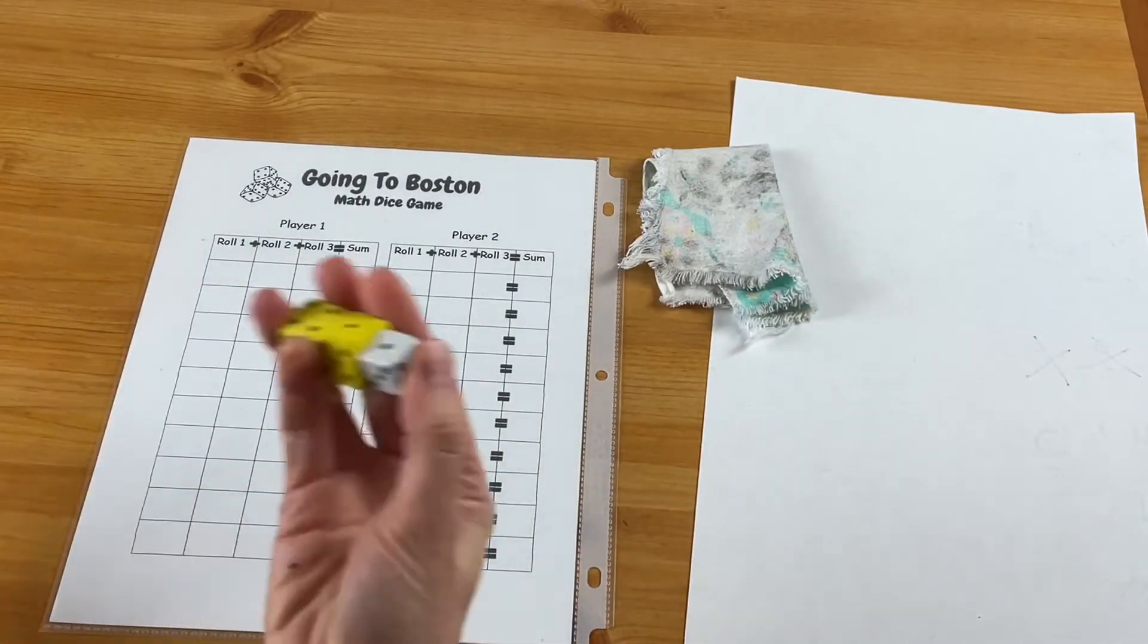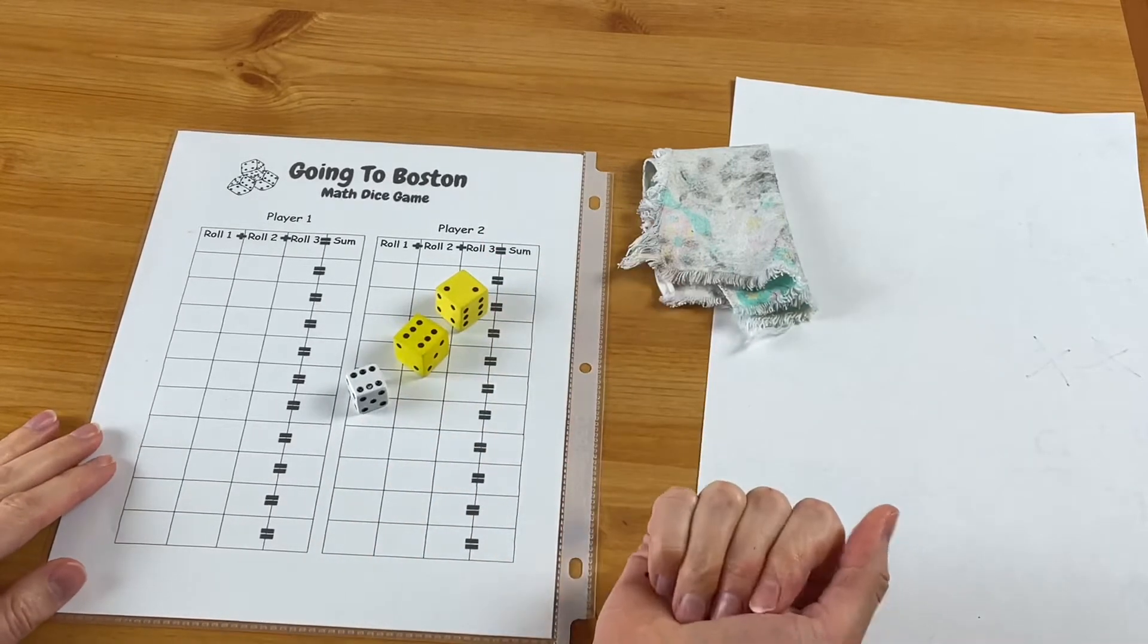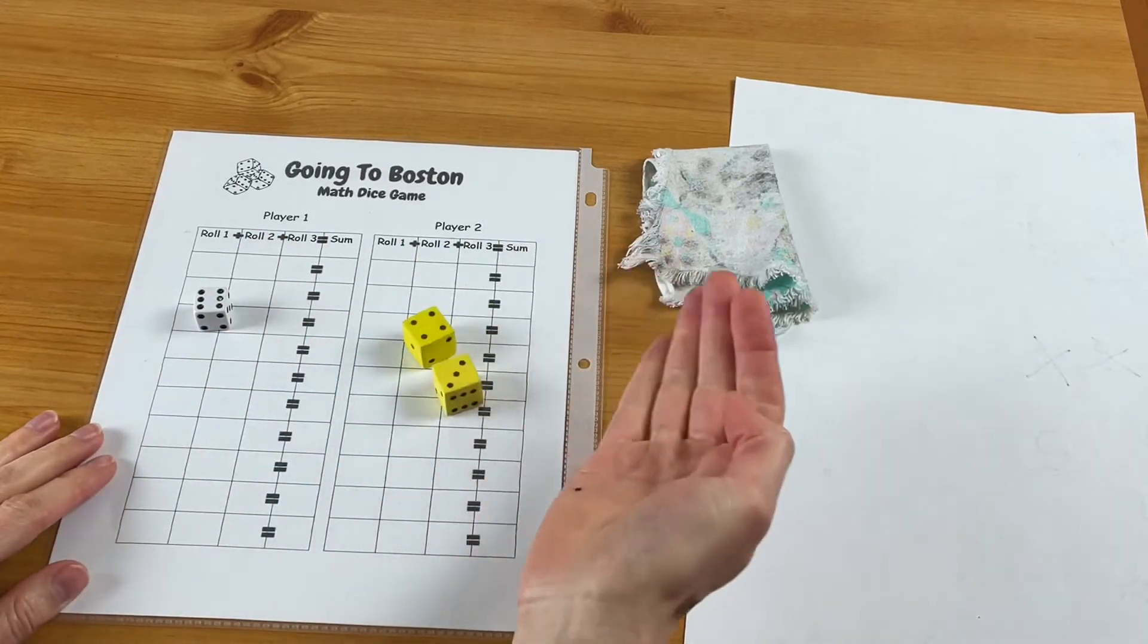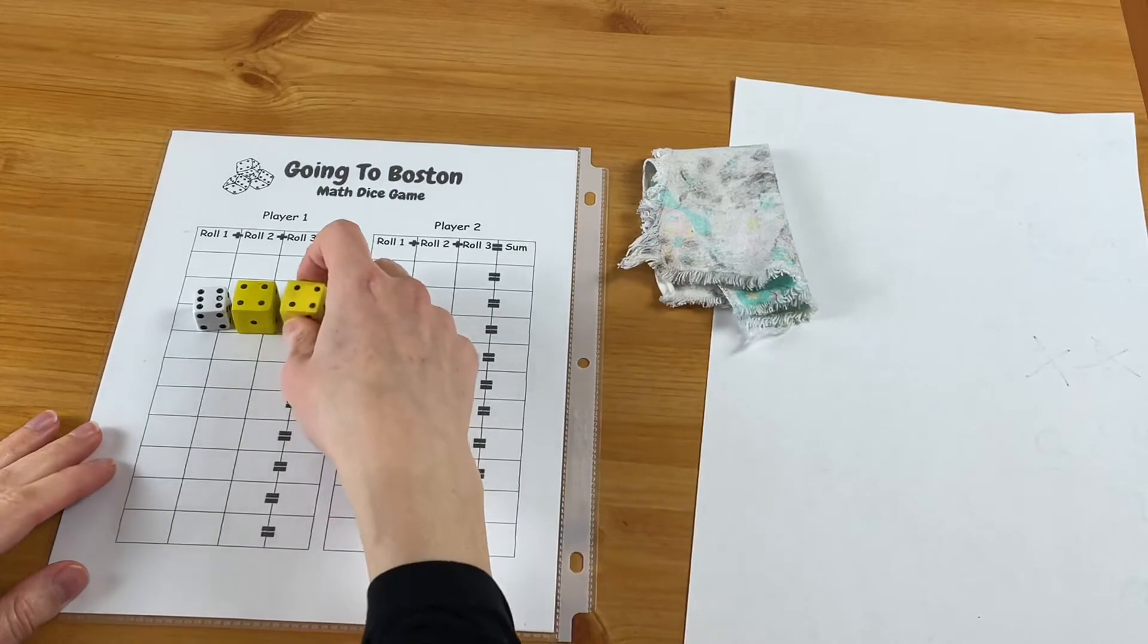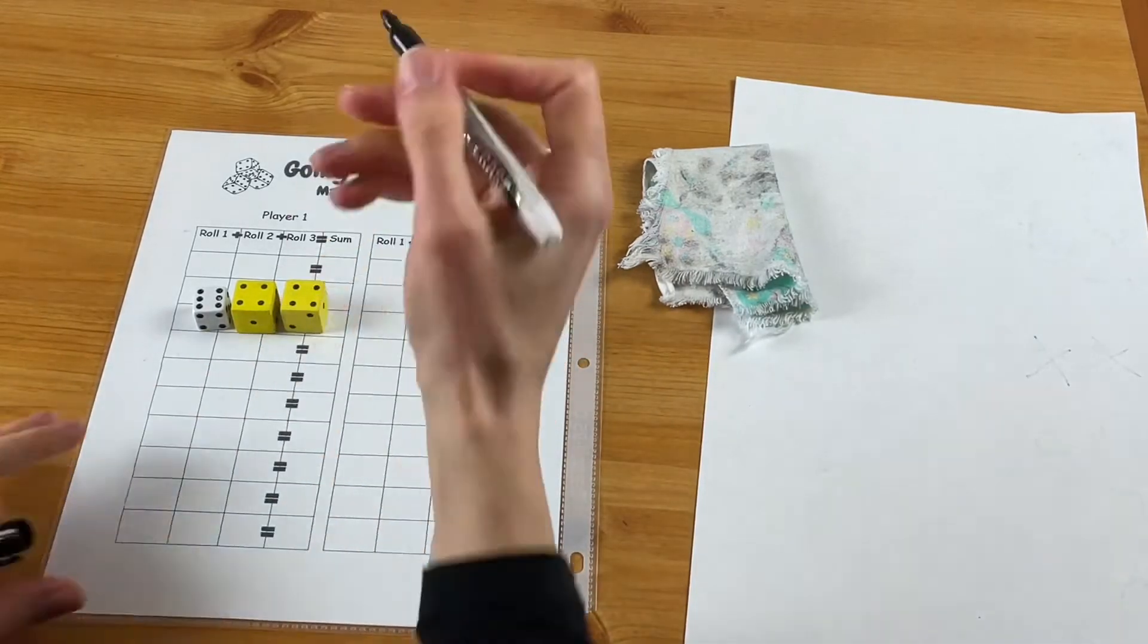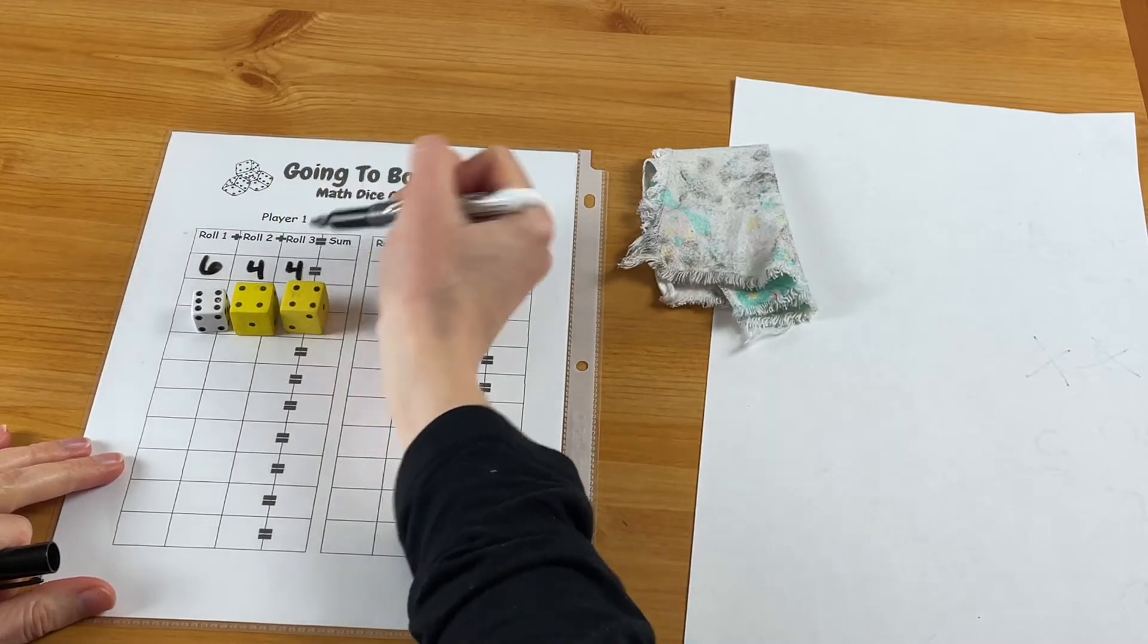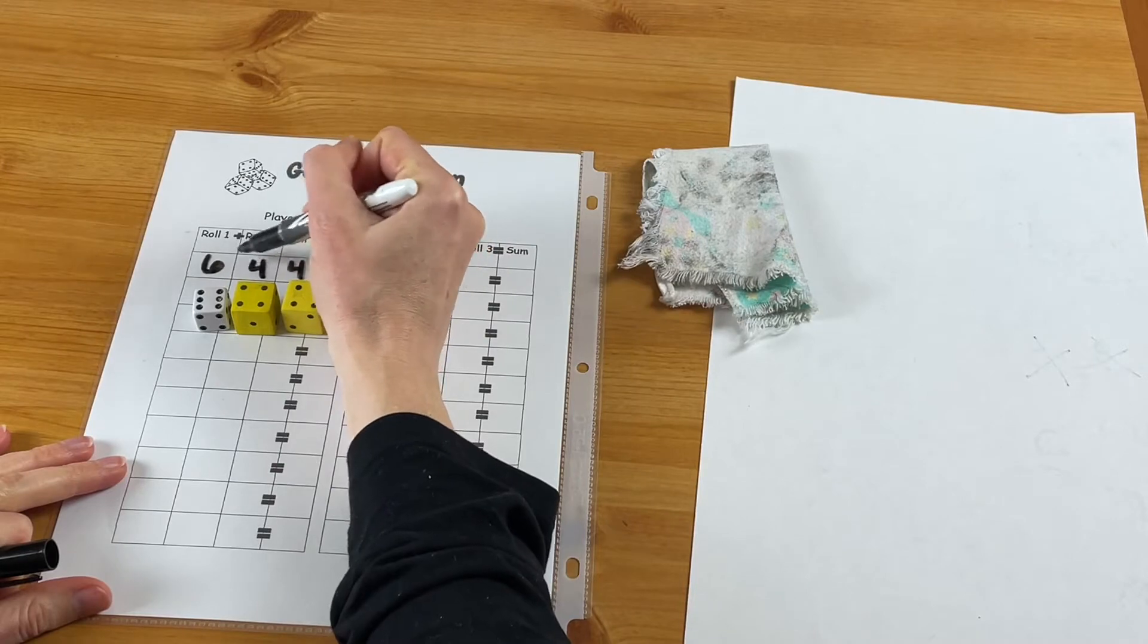Same idea - you would roll, keep the highest, roll the other two, keep that highest and then roll the third. So that's how you would build your math sentence for that. So we've got a six, a four, and a four, and we'd find the sum: six and four makes ten and four more, there's fourteen.